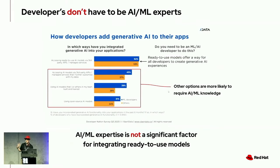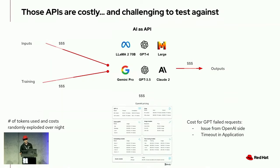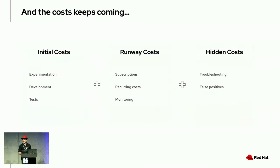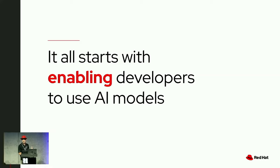Most developers are already using AI models through third-party services, and using LangChain to call a model is amazing. The only issue with a hosted model is that these APIs are costly — they're not free. Every token we use costs a certain amount, so the larger the response and the bigger the model, the higher the costs. Not only are we paying for tokens, there's also subscription fees and other costs to consider when picking a model for our application. But the biggest idea is that it all starts with being able to access a model and use it, and then we'll talk about the production part.